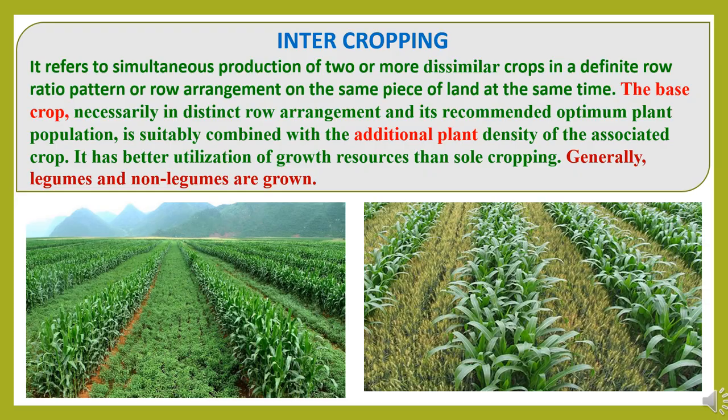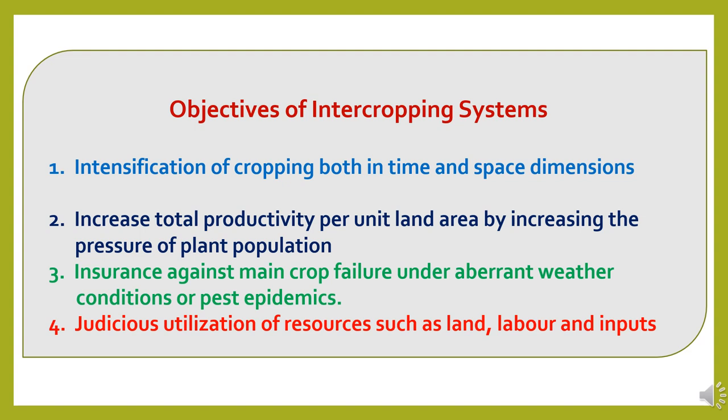Let's move to the presentation. Intercropping refers to simultaneous production of two or more dissimilar crops in a definite row ratio pattern or row arrangement on the same piece of land at the same time. The base crop is necessarily in distinct row arrangement, and its recommended optimum plant population is suitably combined with the additional plant density of the associated crop. It has better utilization of growth resources than sole cropping. Generally, legumes and non-legumes are grown in intercropping.